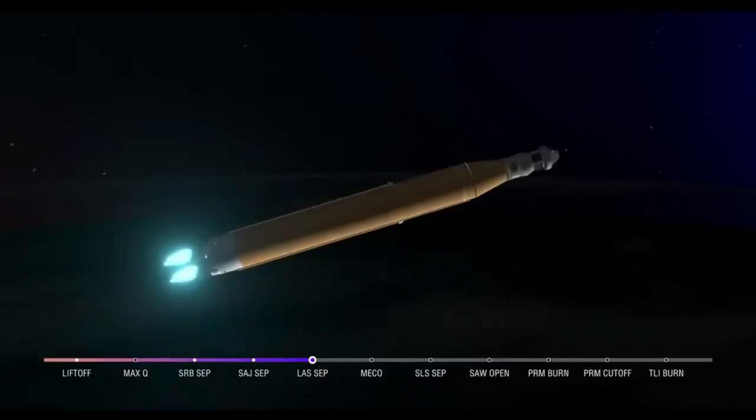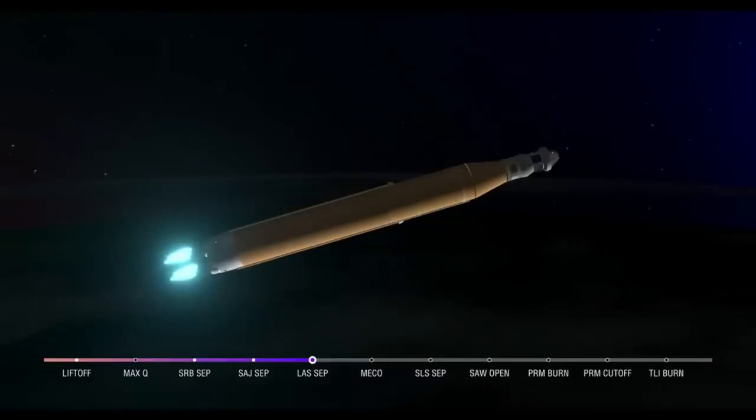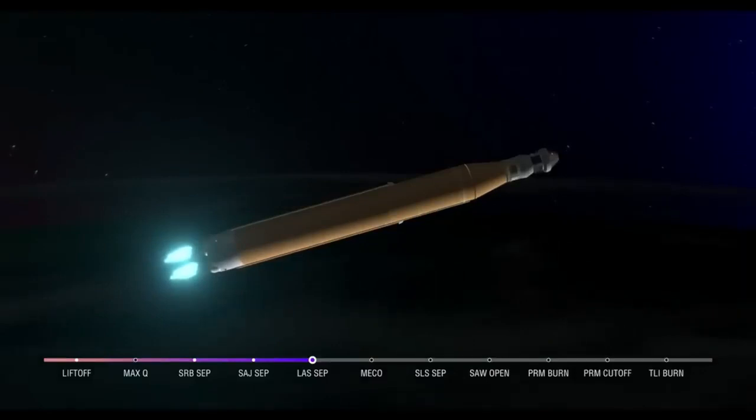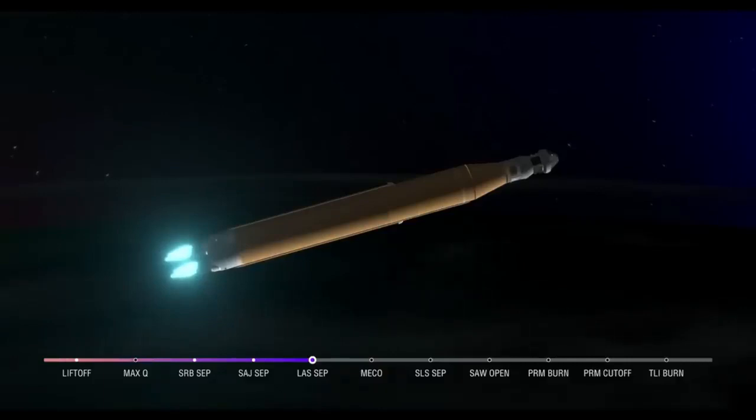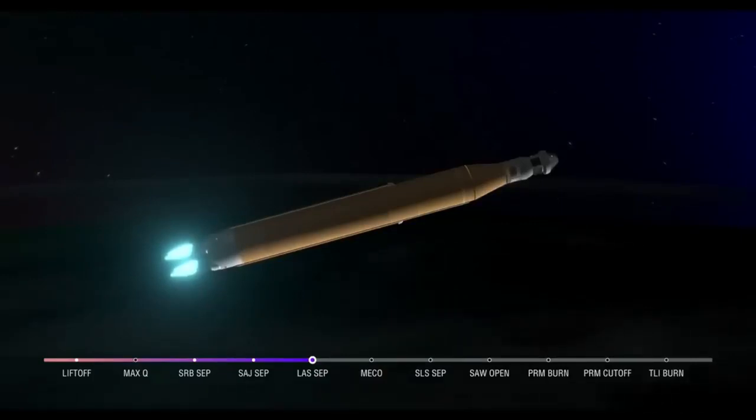Five minutes and 42 seconds into the mission. We are now traveling 8,800 miles per hour, 345 miles downrange from the launch pad at Kennedy Space Center. Again, we are anticipating core stage main engine cutoff at about 8 minutes and 3 seconds. And about 10 seconds later, we'll see core stage separation, at which point Orion and the interim cryogenic propulsion stage will be flying free.